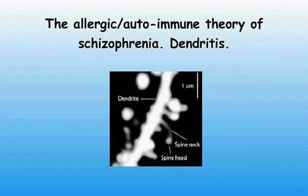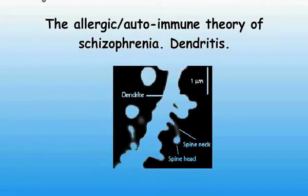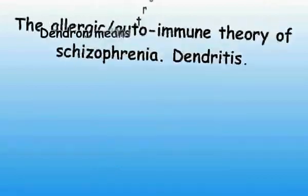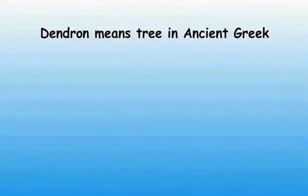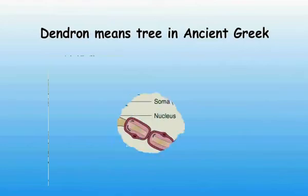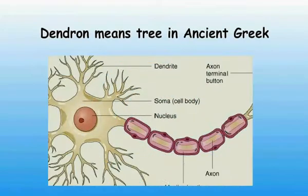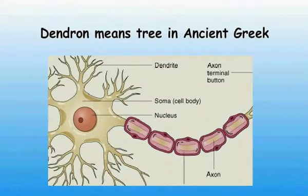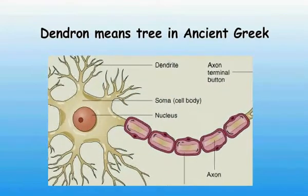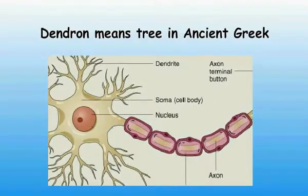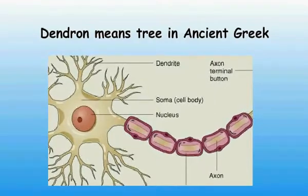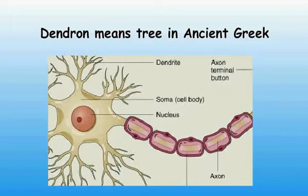The Allergic and Autoimmune Theory of Schizophrenia. When I was at medical school I was taught that nerve cells or neurons have several fibers receiving information from other neurons. These fibers are called dendrites. They are so called because they appear tree-shaped on microscopy. Dendron means tree in ancient Greek.